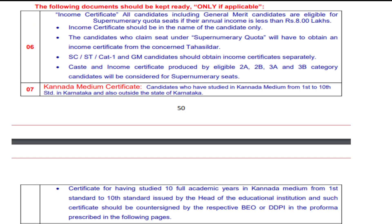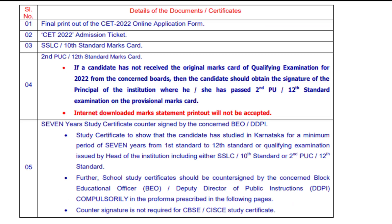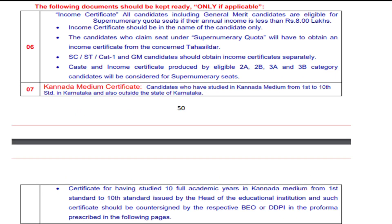The following documents should be kept ready only if applicable. The first 5 documents are mandatory for all students. The next set of documents are only needed if they apply to your specific situation or eligibility category.